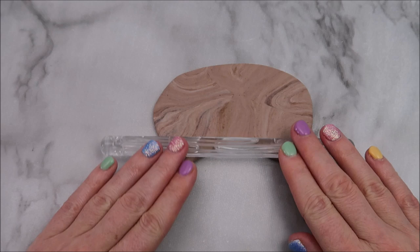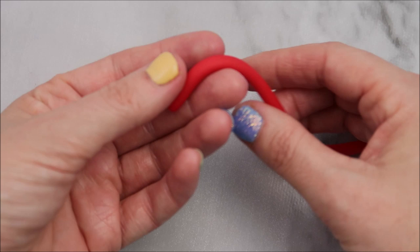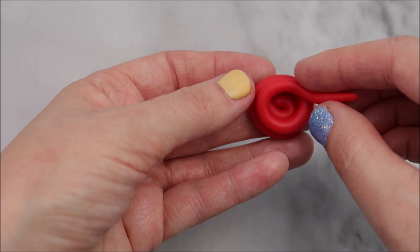Create some paint for your palette by rolling out some fondant into a thin snake piece, and then you're just going to wrap it up into a spiral shape.